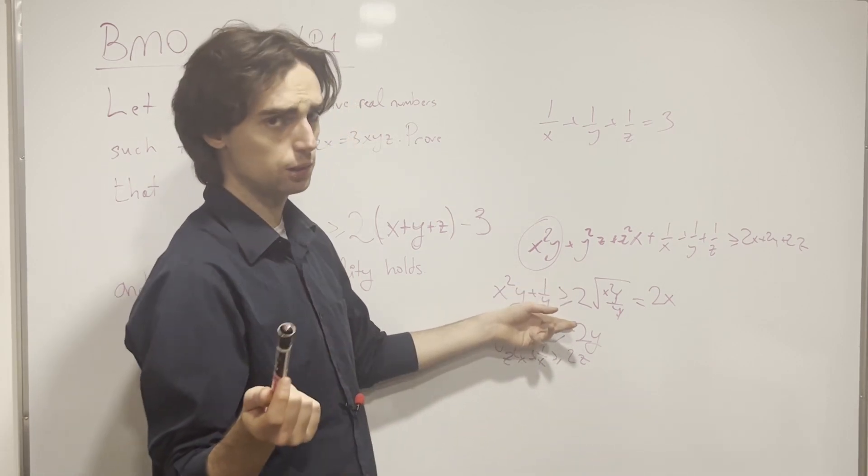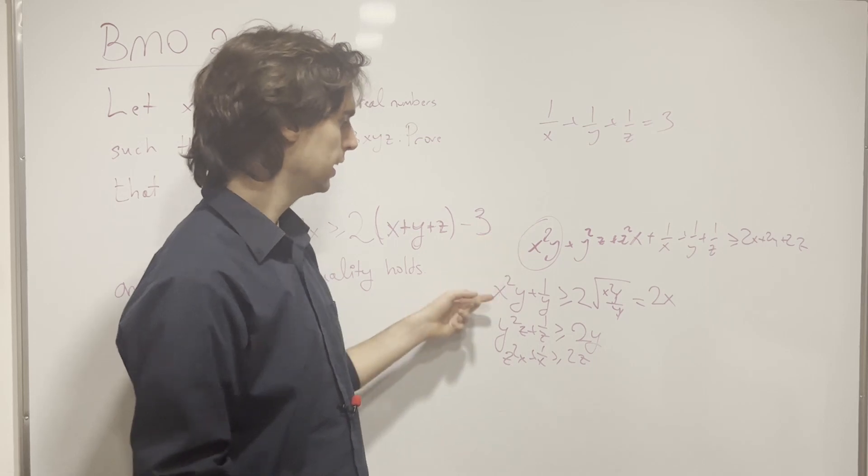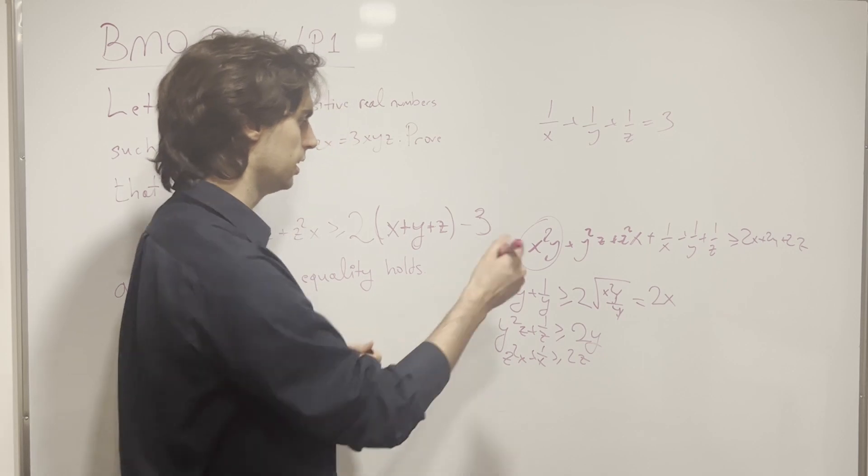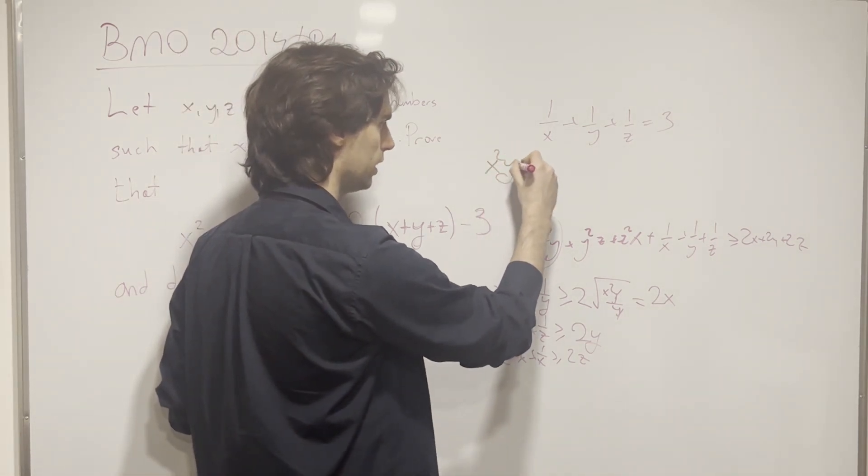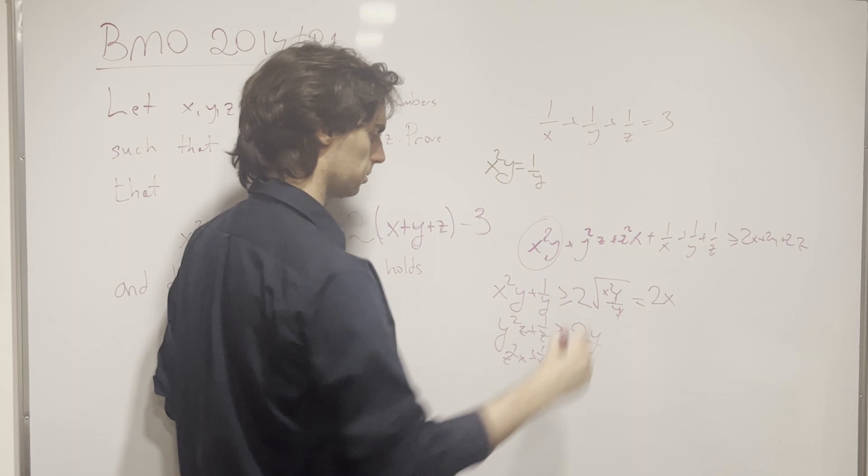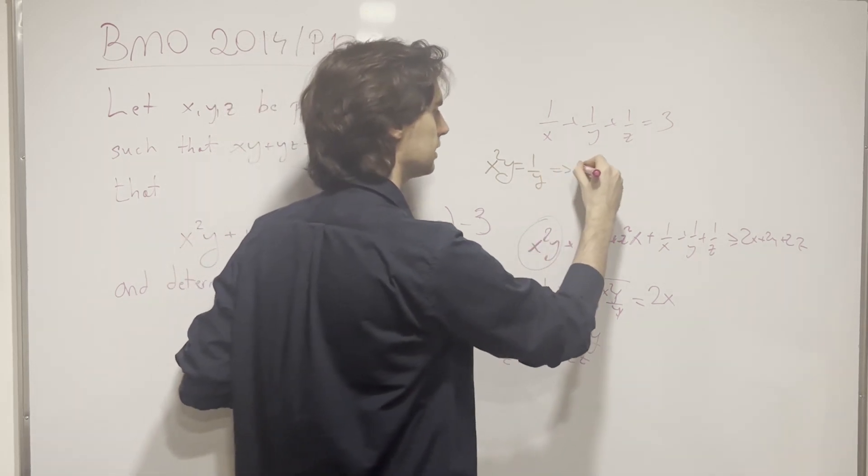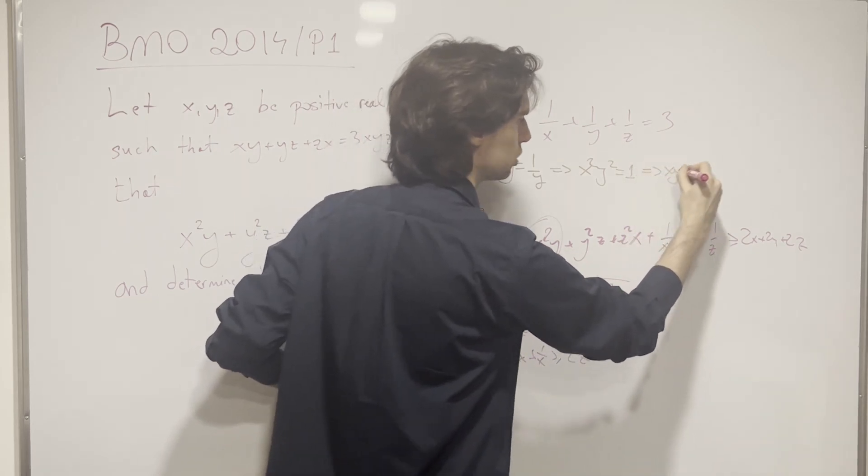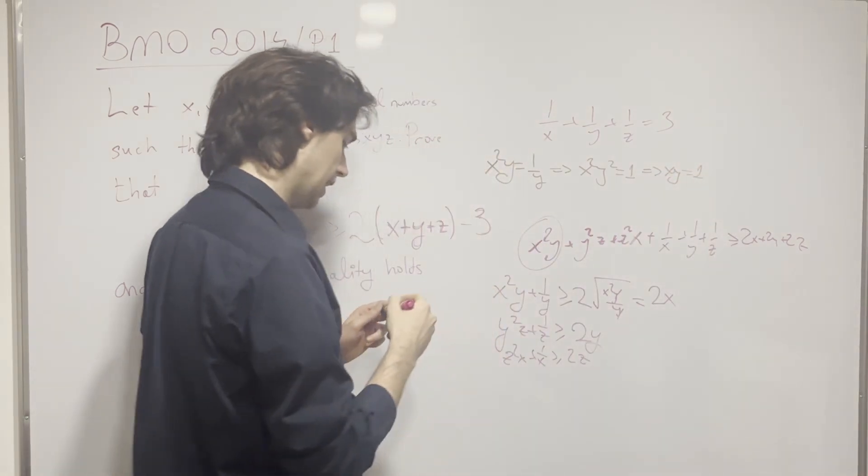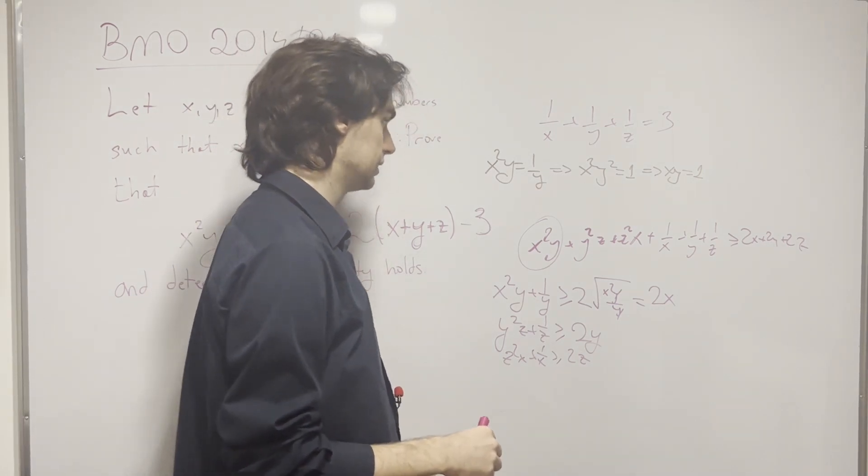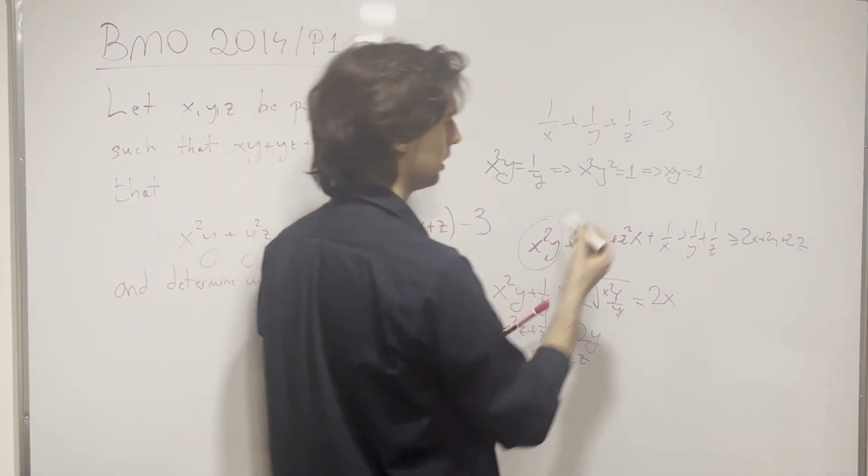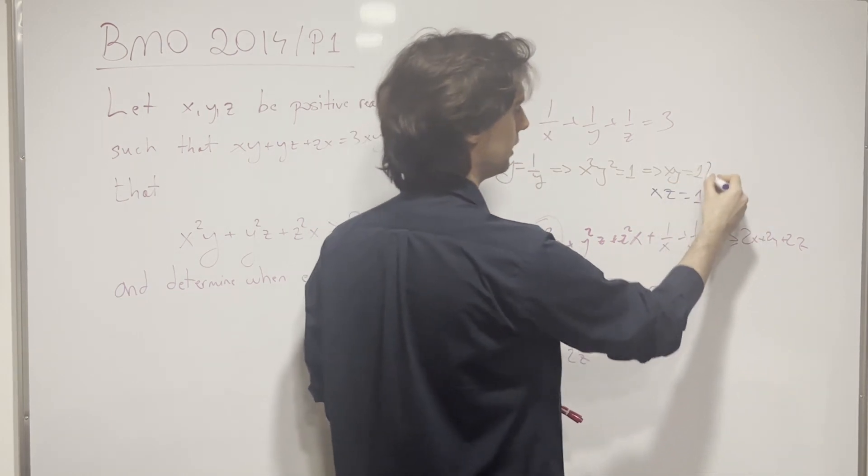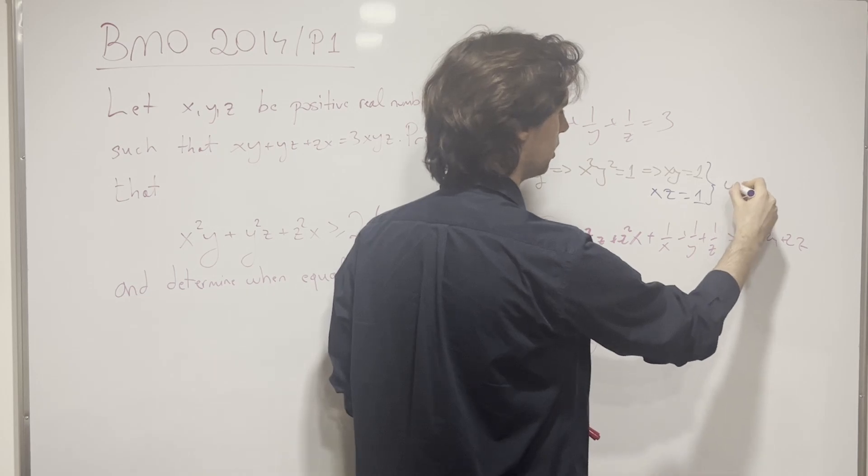if and only if it holds true in every single one of these points. Well, realistically, what you need, you don't need an if and only if. You just need to say, if it holds here, it must hold in every one of these cases. And given I'm using AM-GM, it must hold if x squared y is equal to 1/y, which is the same as x squared y squared is equal to 1, which is the same as xy is equal to 1. And then cyclically, what I have is that I need to have, in the same way I need to have, xz is equal to 1.